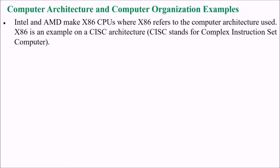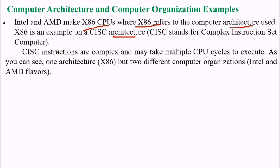Let us take an example. Intel and AMD make x86 CPUs, where x86 refers to the computer architecture used. x86 is an example of a CISC architecture — CISC stands for Complex Instruction Set Computer. CISC instructions are complex and may take multiple CPU cycles to execute. Intel and AMD represent two different computer organizations within the same x86 architecture.